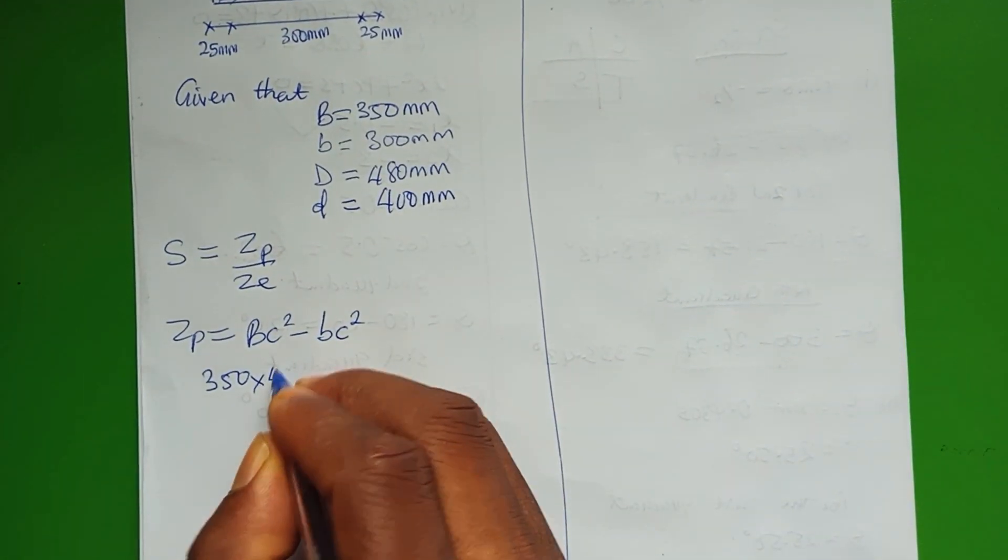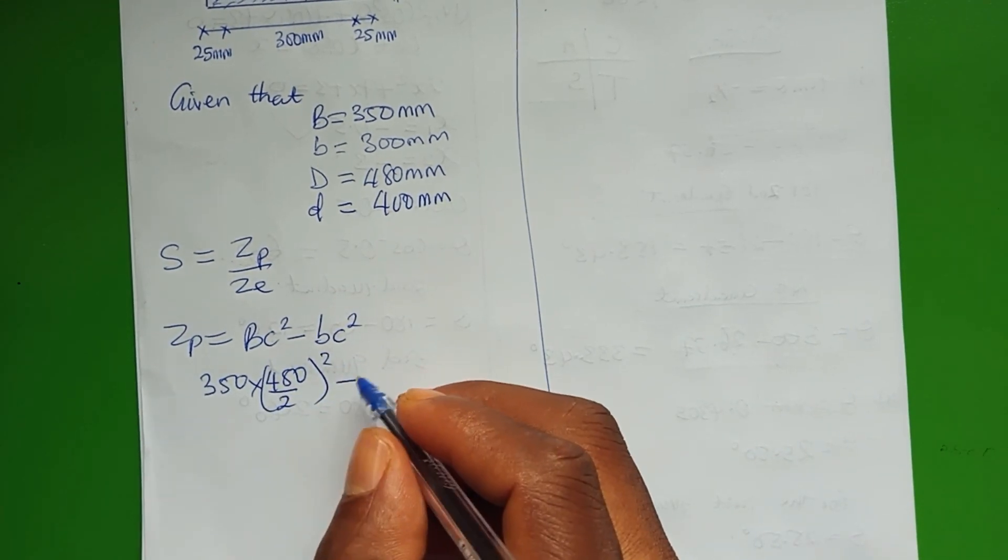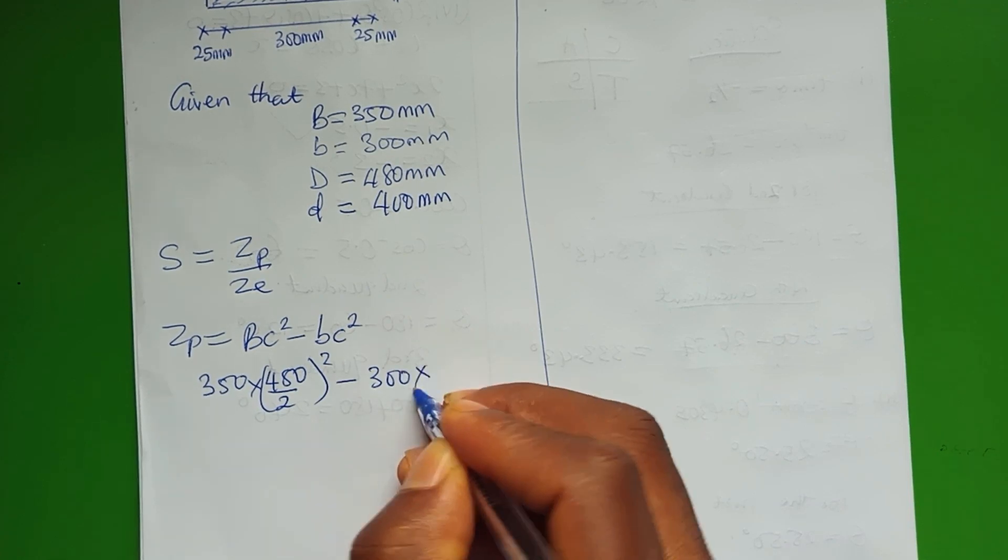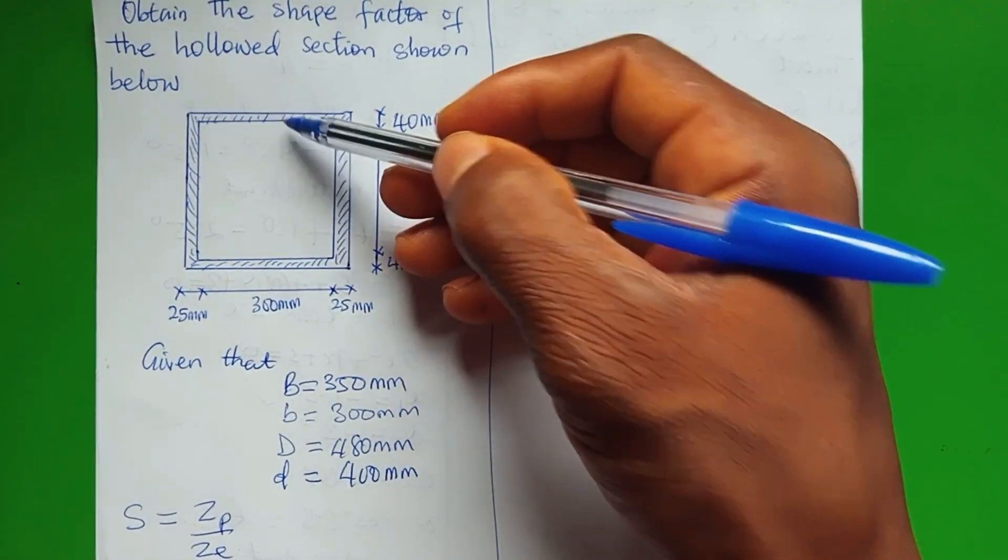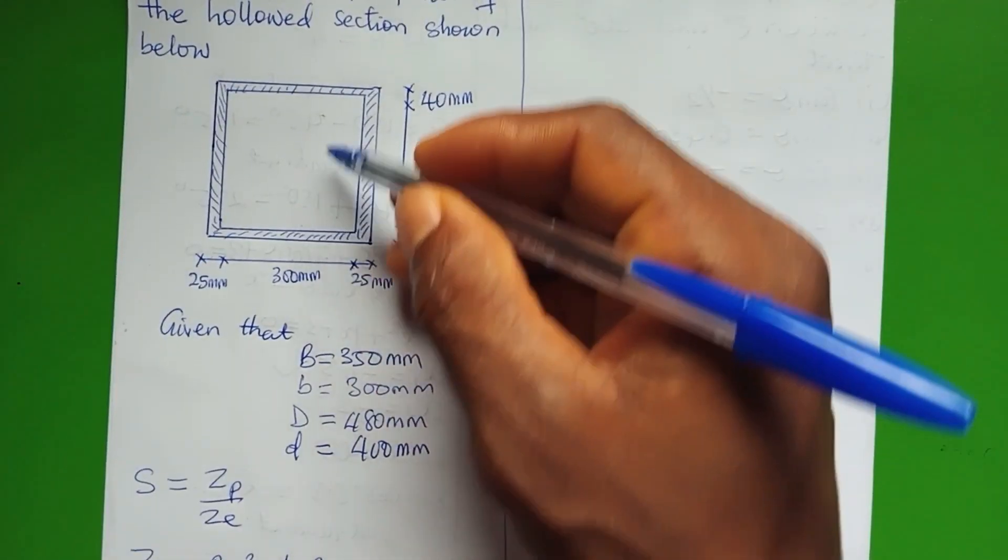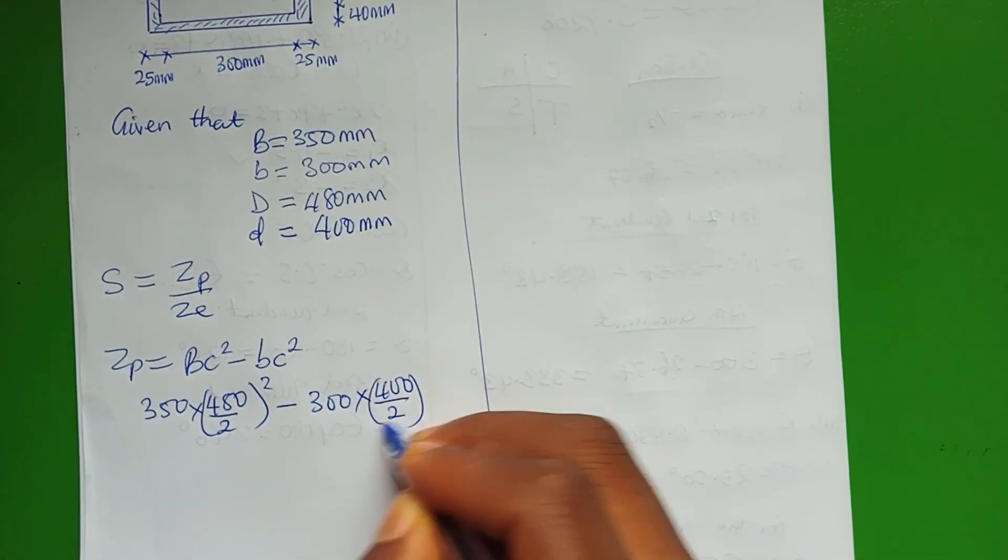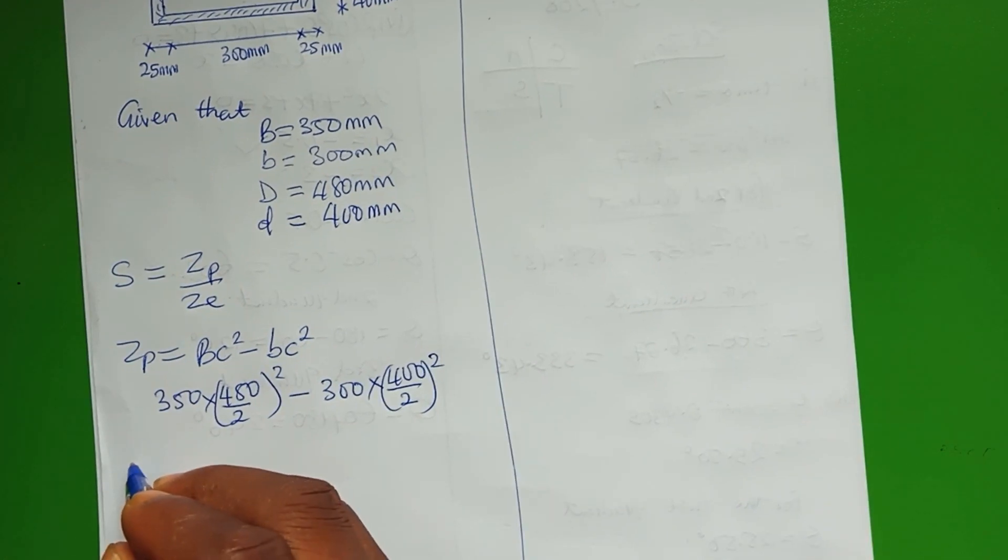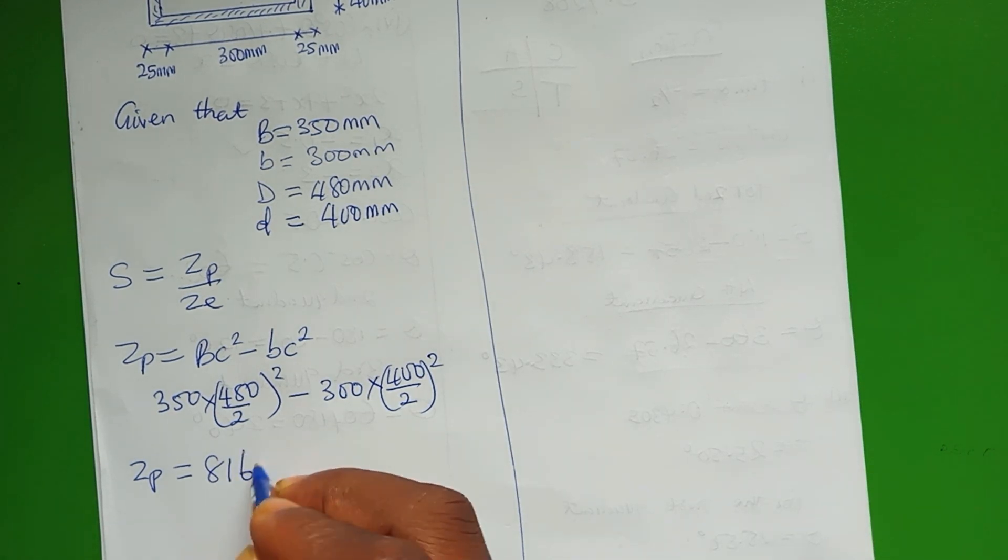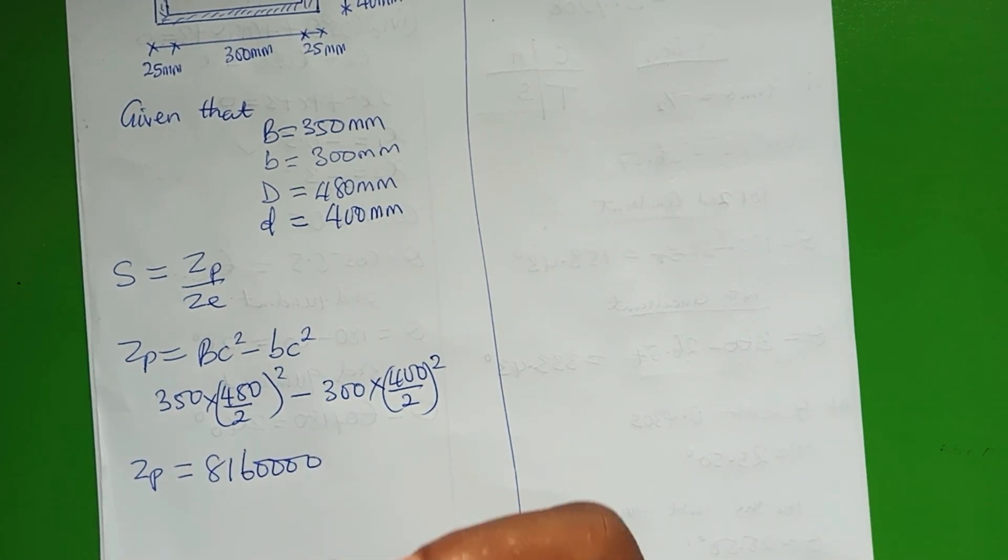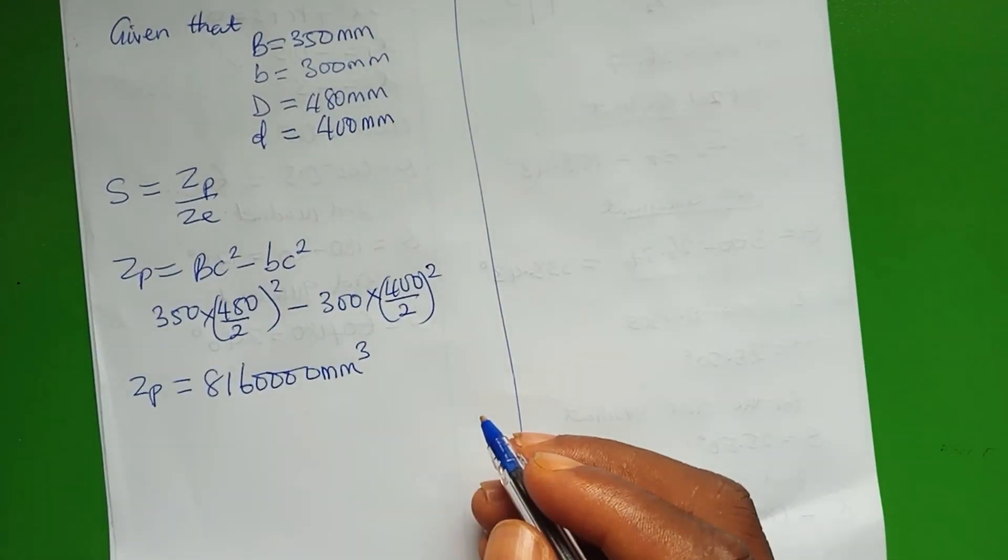That is 480 over 2 squared, then minus the small b which is 300 multiplied by the centroid of the square inside. The small one has depth of 400, so it will be 400 over 2, then you square it. This will give you that Zp is equal to 8,216,000 millimeters cubed.